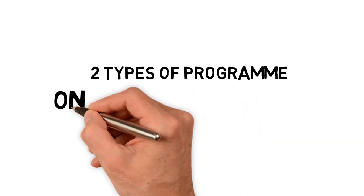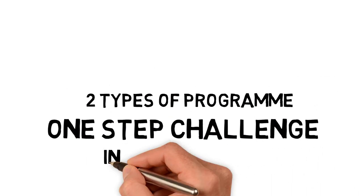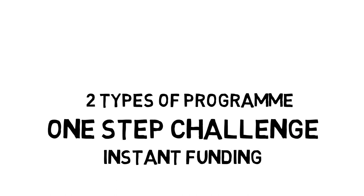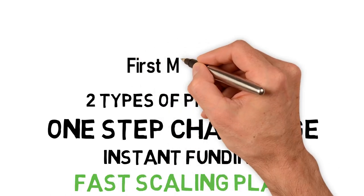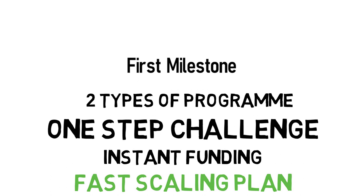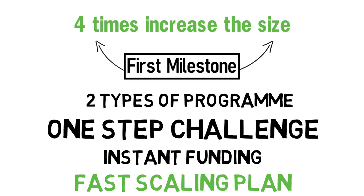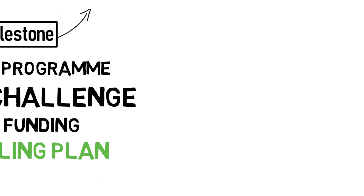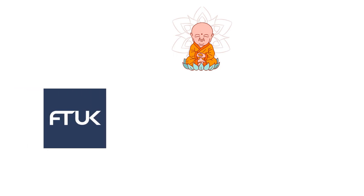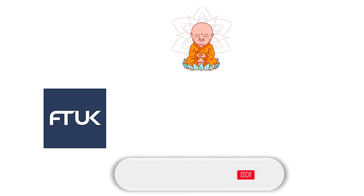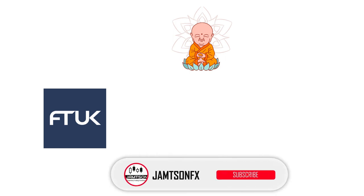FT UK provides two types of programs: a one-step challenge and instant funding. They have a very fast scaling plan — if you achieve the first milestone target, they increase your capital size by four times. But there is a trick here which I will let you know in this video. Namaskar to all traders and welcome. Today I'll be talking about FT UK. If you haven't subscribed the channel yet, kindly consider subscribing and liking this video, and let me know in the comments which prop firm you want covered next.